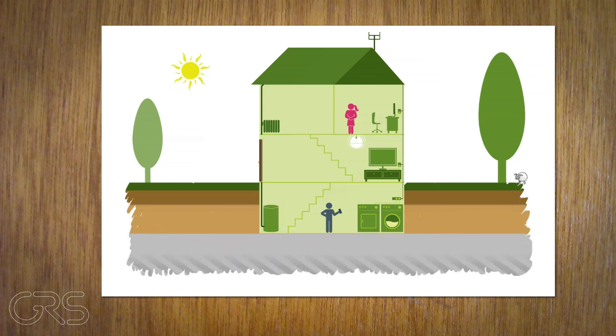Under the house there are layers of soil and rock. There you can also find a natural radioactive element called uranium. Over time the uranium decays and forms new materials, among them a gas called radon.